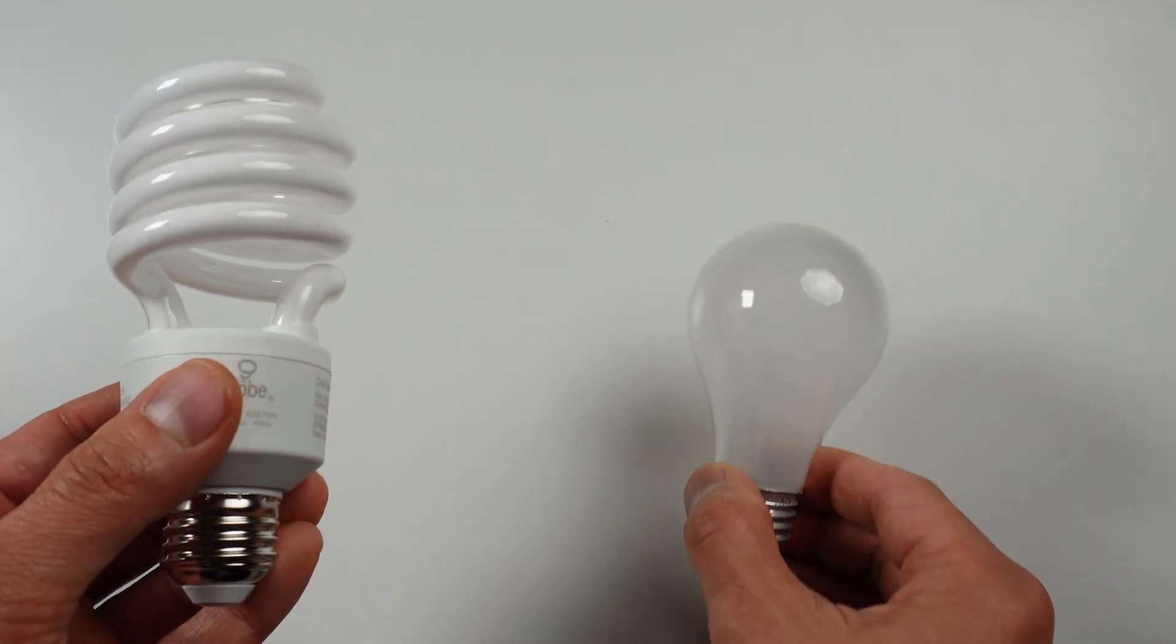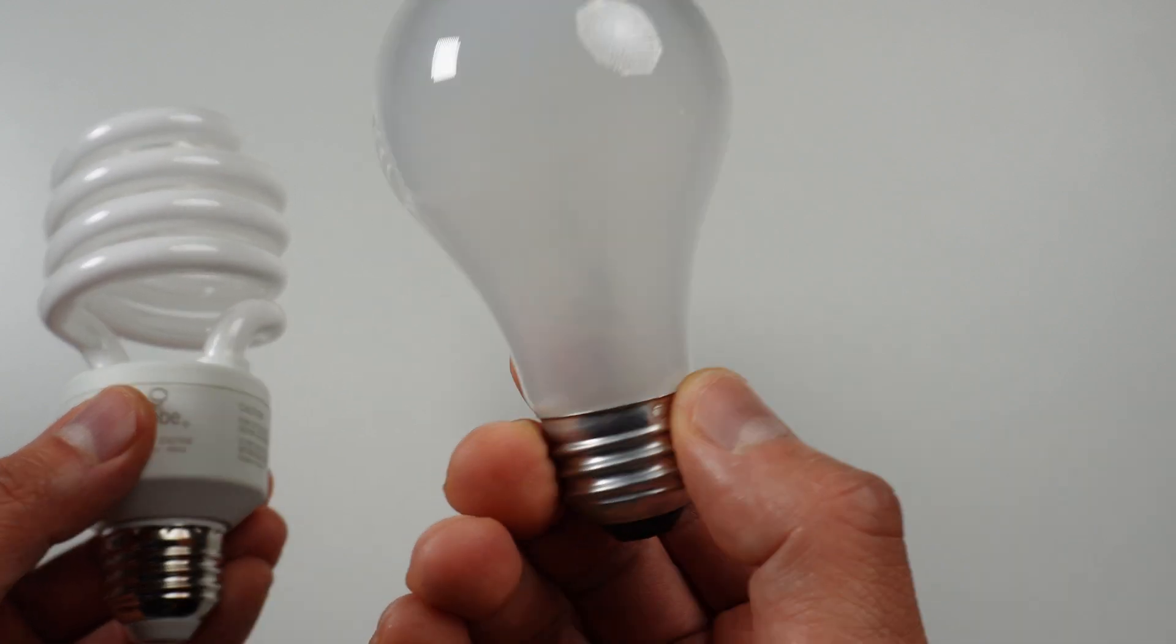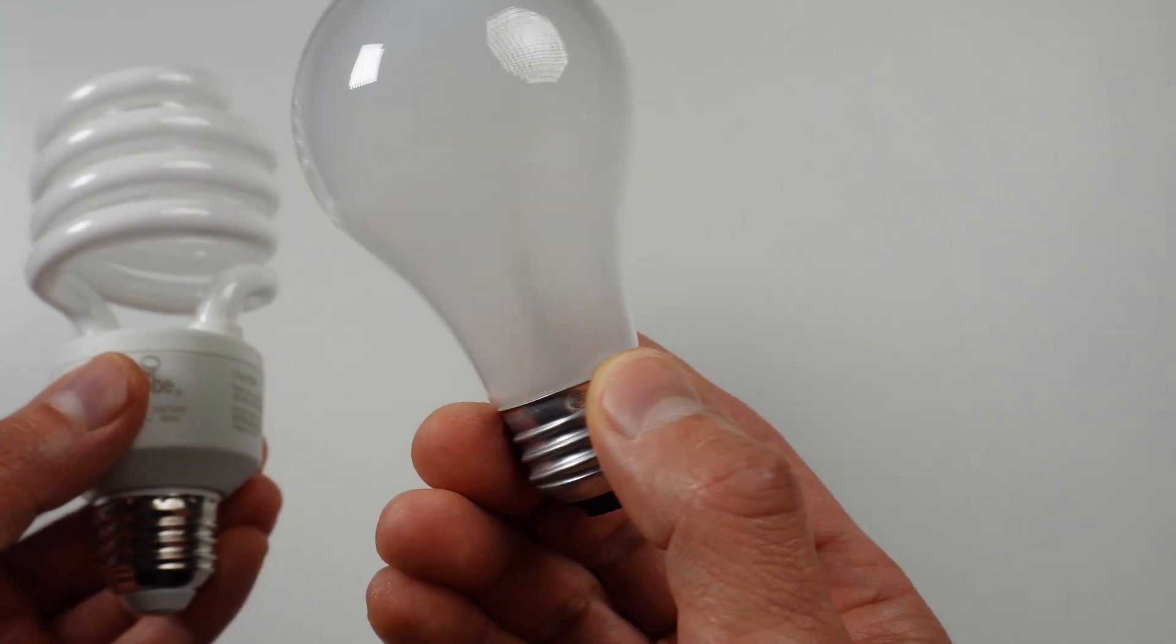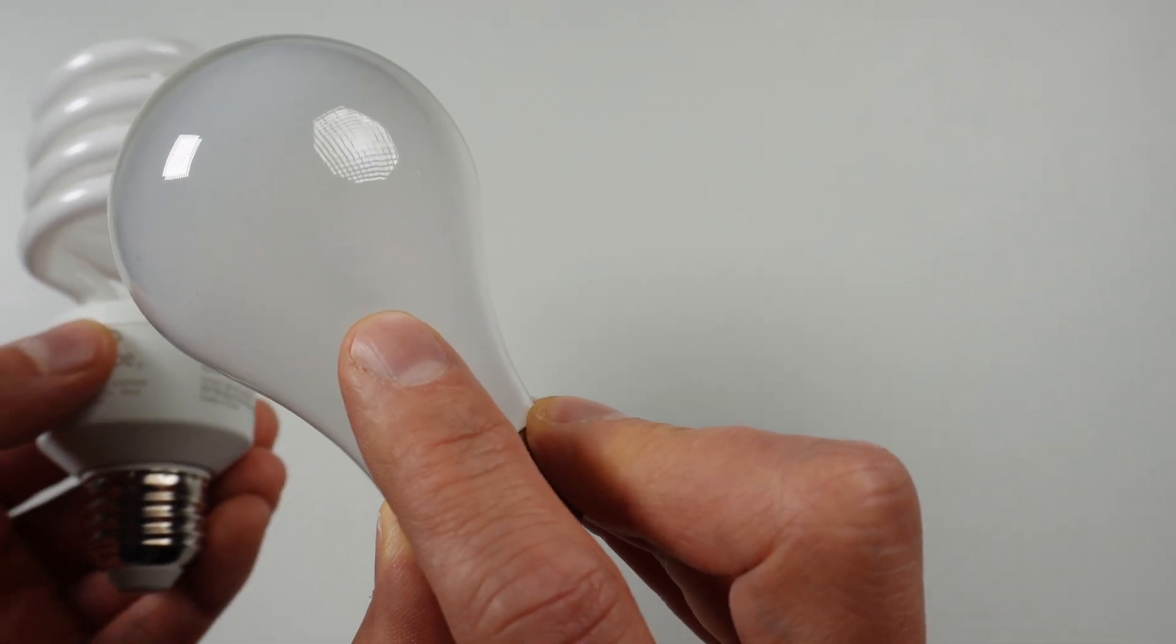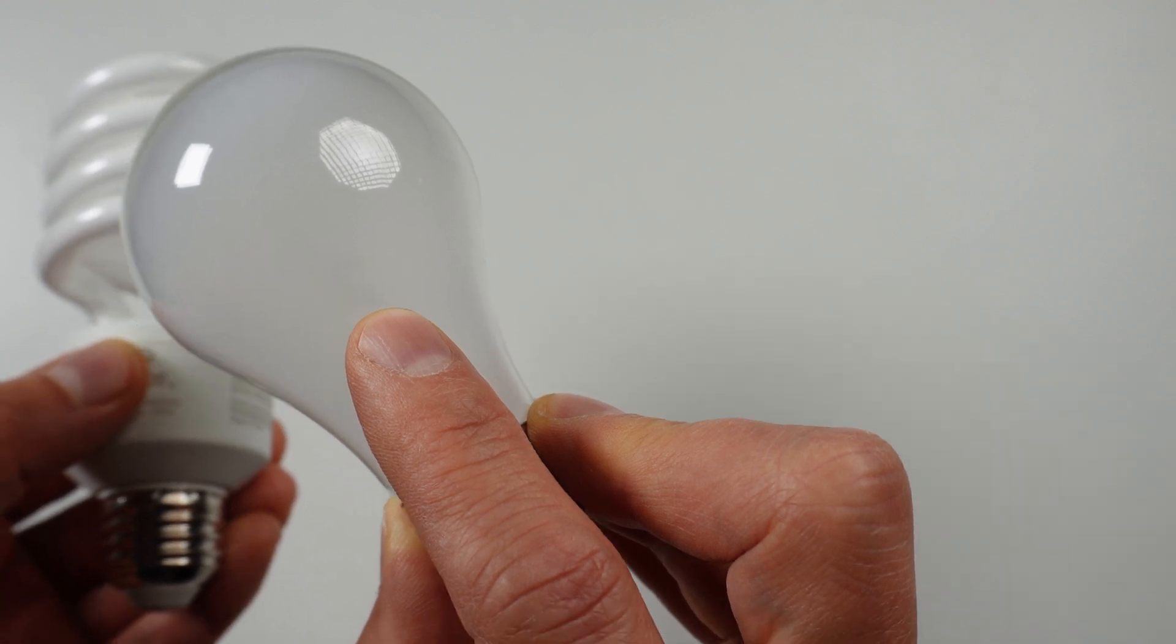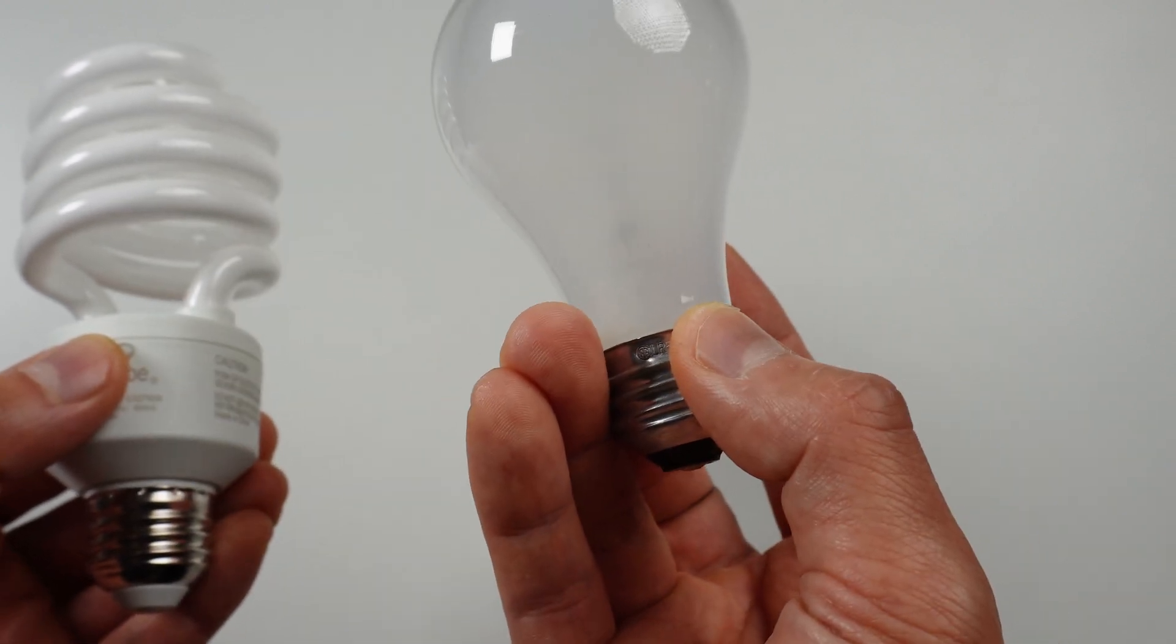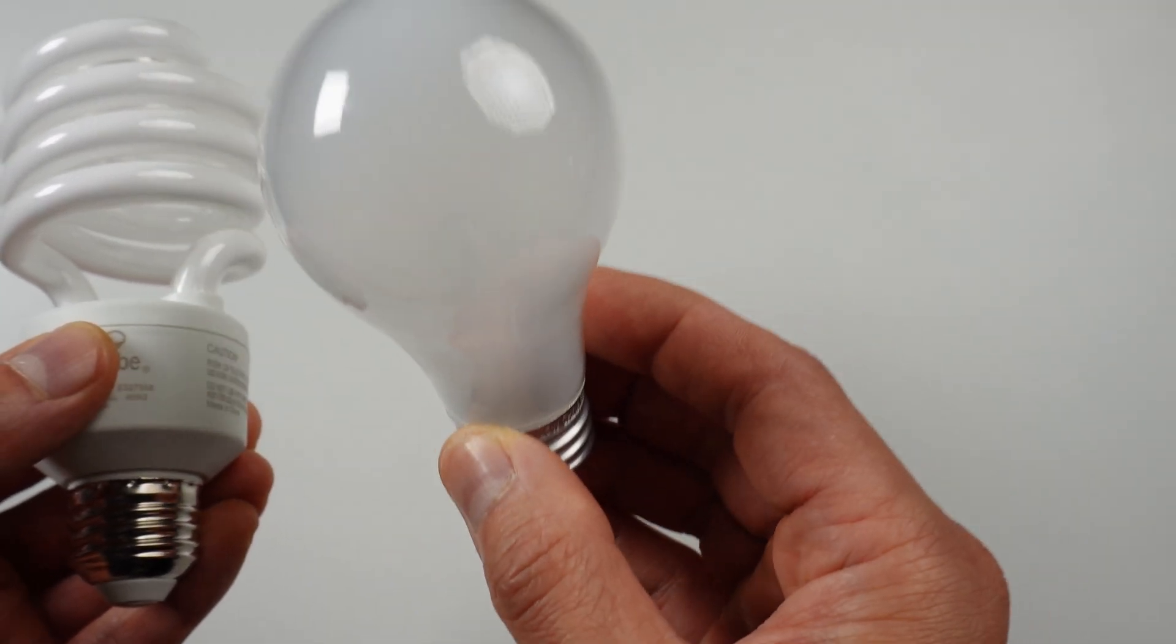If you think about it, incandescent bulbs haven't changed much since Thomas Edison first introduced them back in 1879. These bulbs still generate light by heating a tungsten filament until it reaches 2300 degrees celsius and glows white hot. This is why they're so inefficient, because only 10% of the electricity that goes into the bulb actually turns into light. The rest is dissipated as heat.